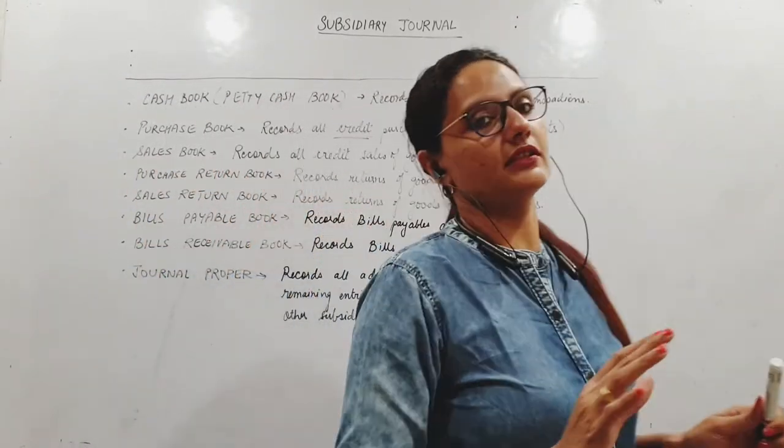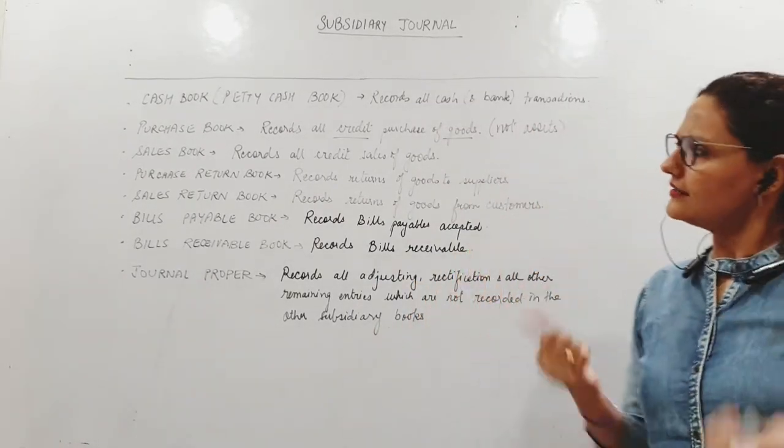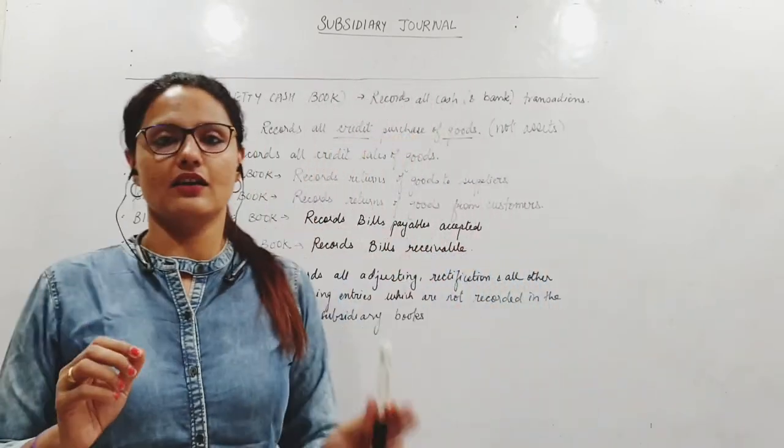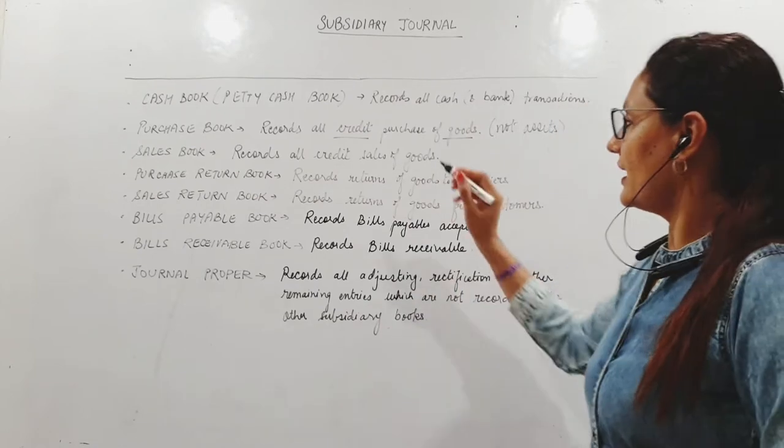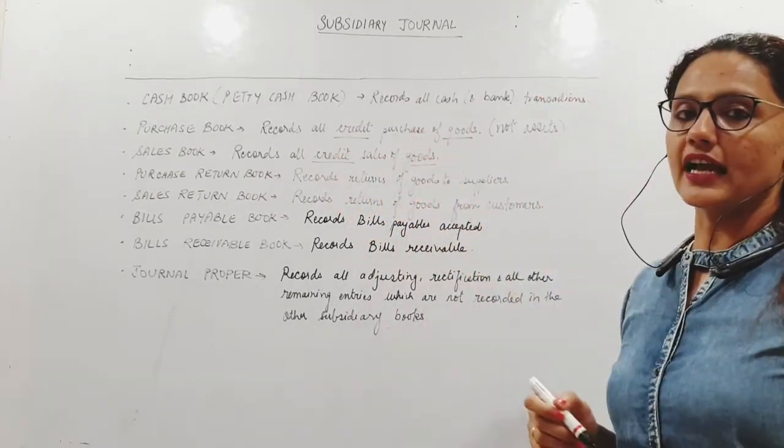Similarly, sales book records only credit sale of goods. We can sell assets but will not record it here, and we can sell goods for cash which will be recorded in cash book.